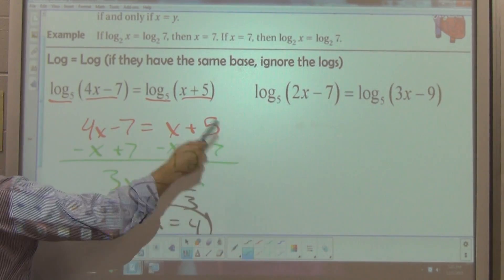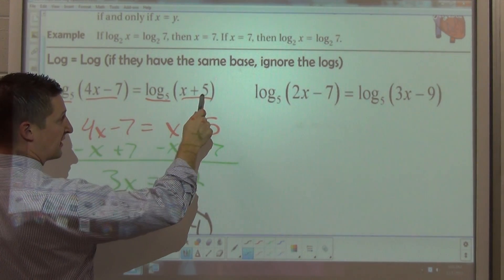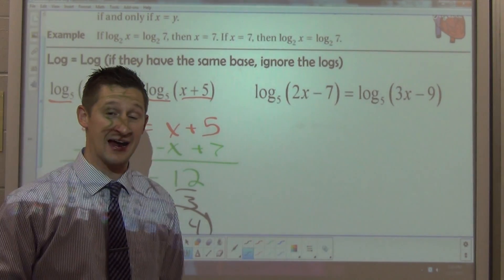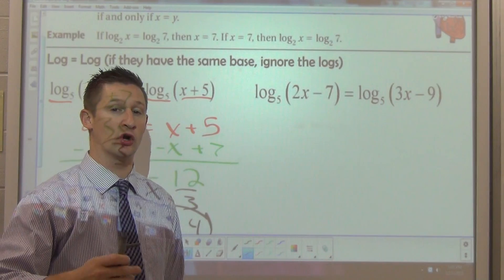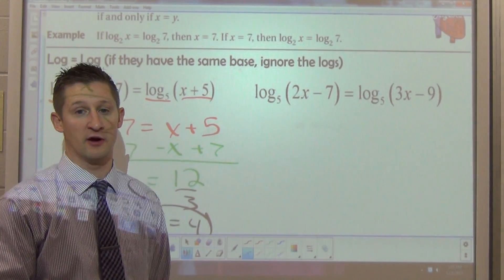So if I plug in 4, 4 times 4 is 16 minus 7 is 9. Remember that? Over here, 4 plus 5 is 9. Is it okay to take the log base 5 of 9? Yes, it is. Key being you can only take a logarithm of a positive number. If that gives us a positive number, we're going to be okay.